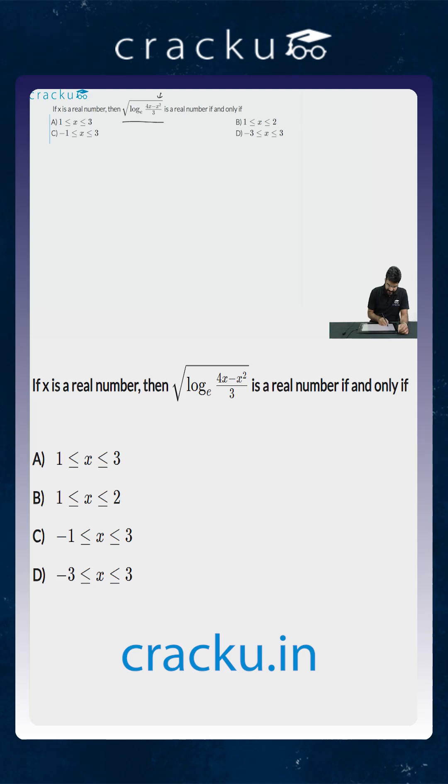If you look at it carefully, we want the square root of log to the base e of 4x minus x square by 3 to be a real number.